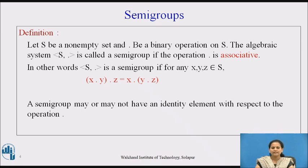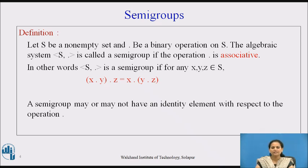So now we can differentiate an algebraic system from a semigroup: it is an algebraic system which possesses the property of associativity. A semigroup may or may not have an identity element with respect to the operation dot. We have seen examples of algebraic systems which also have an identity element, for example the set of integers, set of natural numbers, and so on.